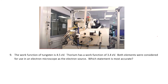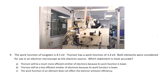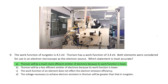Question 9: The work function of tungsten is 4.5 electron volts. Thorium has a work function of 3.4 electron volts. Both elements were considered for use in an electron microscope as the electron source. Which statement is most accurate? A: Thorium will be a much more efficient emitter of electrons because its work function is lower. B: Thorium will be a less efficient emitter of electrons because its work function is lower. C: The work function of an element does not affect electron emission efficiency. Or D: The voltage necessary to achieve electron emission in thorium will be greater than that in tungsten. The correct answer is A — thorium will be a much more efficient emitter of electrons because its work function is lower. If you heat up thorium or apply a voltage to it, it's much easier to strip the electrons out of thorium than tungsten, because the work function in thorium is lower.